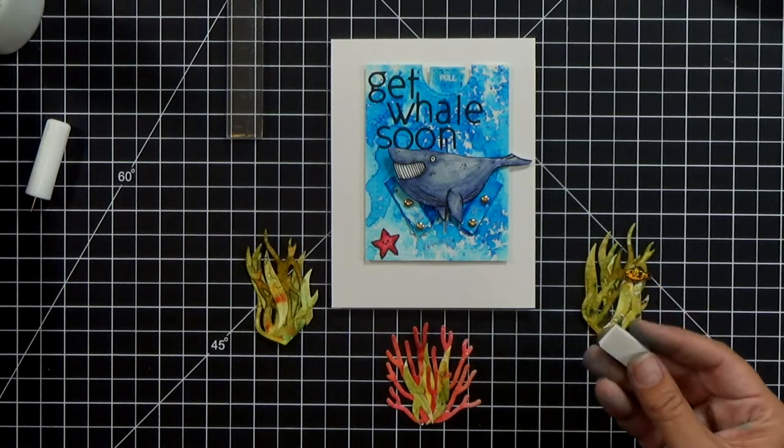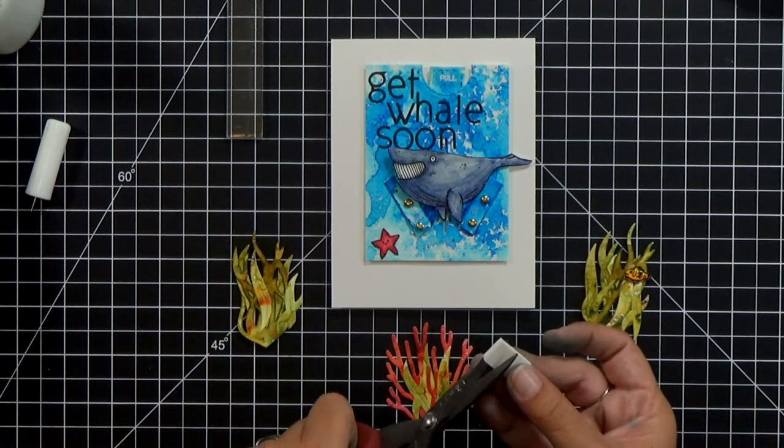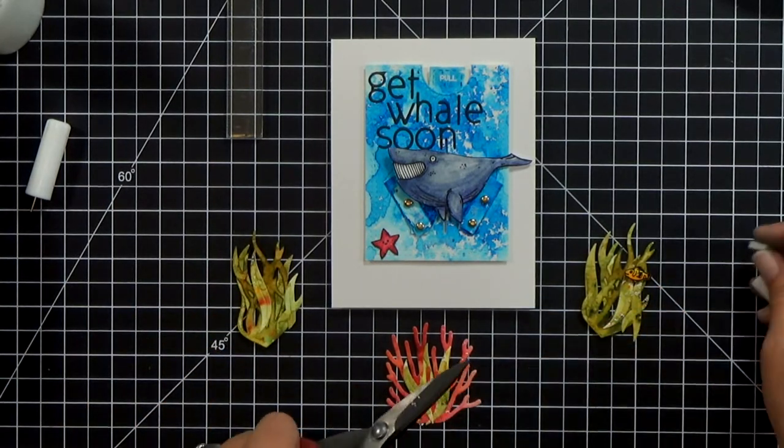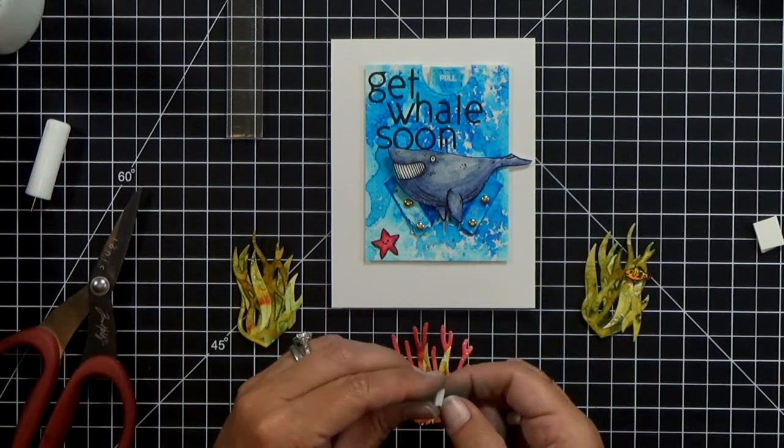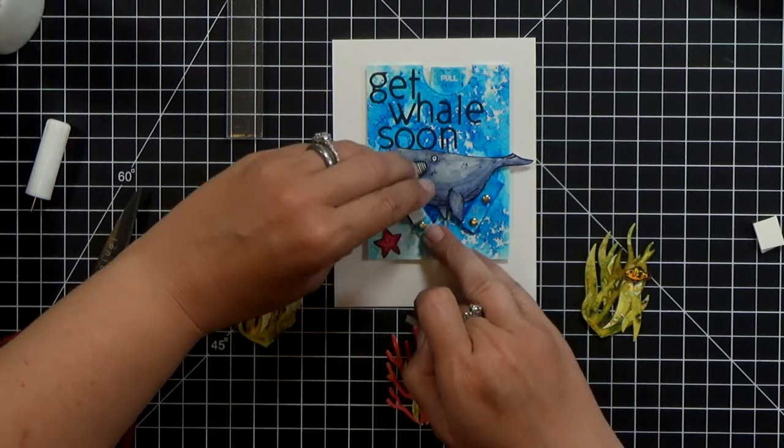Once you get it in place, the hard part's done. We've done all the major work. The only thing left to do is decorate and kind of cover up the whale and those little arms so that when you pull on it he peeks out and it's a surprise.